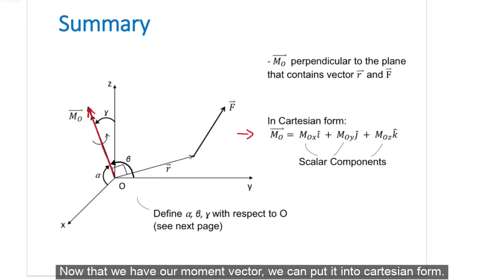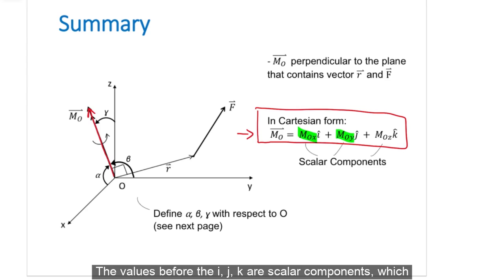Now that we have our moment vector, we can put it into Cartesian form. The values before the ijk are our scalar components, which is represented by the x, y, and z moment force components.